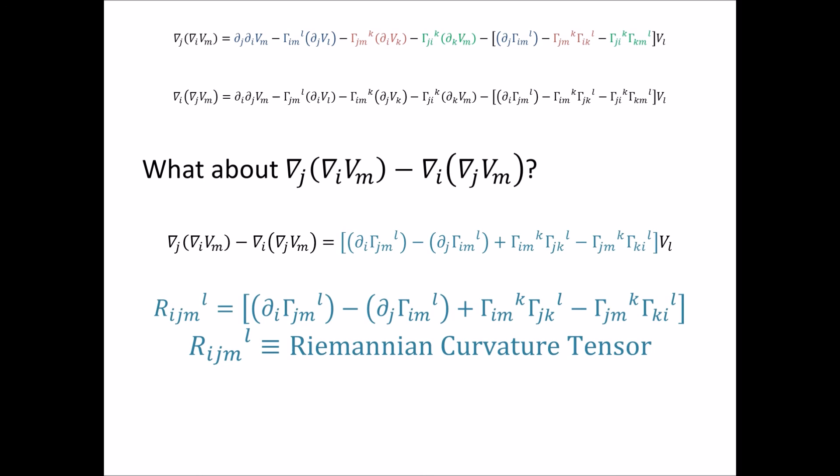Now, from a physics standpoint, what this means, what this indicates to us is the nature of the space. If every component of this Riemannian curvature tensor is zero, we are indeed dealing with a flat space. And if every component is not zero, we can start to make some conclusions about how the space is curved.